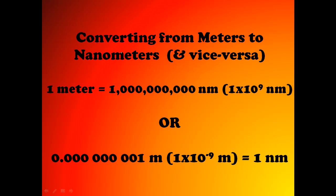What we're going to do is work on converting from meters to nanometers and vice versa. When you use the speed of light calculations, speed of light is going to be measured in meters per second. So you always have to put meters into the equation and get meters out of the equation. That means if you're given the original wavelength in nanometers, you've got to get it into meters first, then you can use meters in your equation.